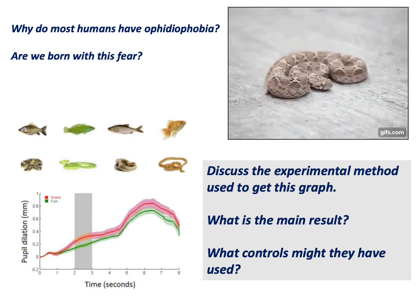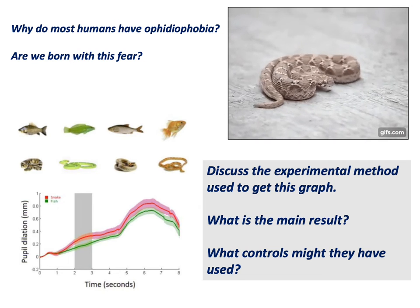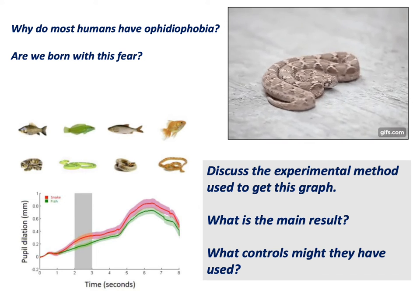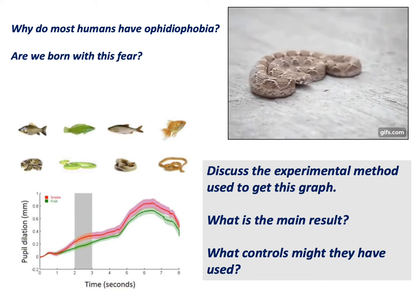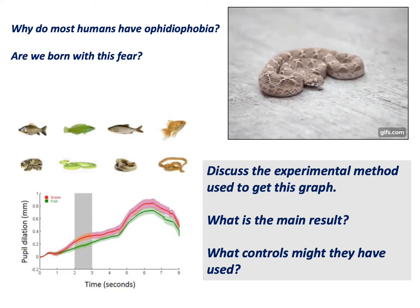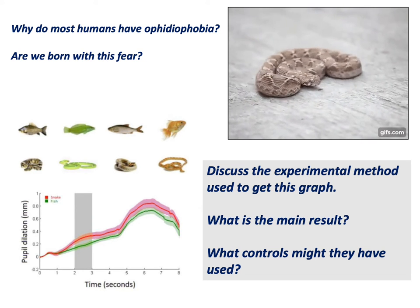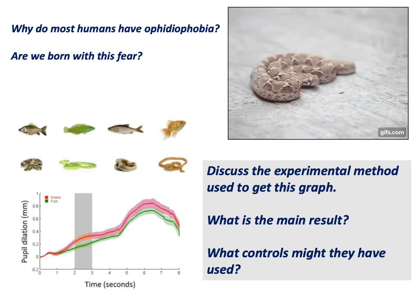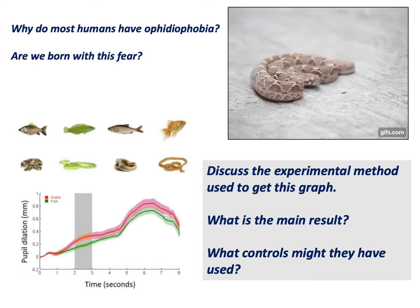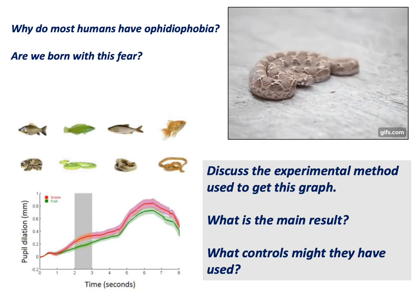Let's start with the mechanics of the graph. The dilation of the pupils is a hallmark of undergoing a fight-or-flight response, or a stress response. So when the pupils are dilated, you're undergoing stress. This is looking at the change in dilation of pupils in response to images — images that are either of a snake or a fish, with the hope being that people aren't afraid of fish.